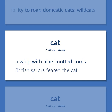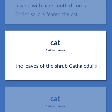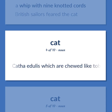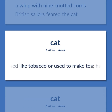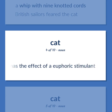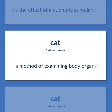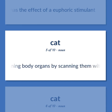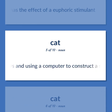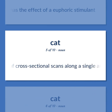British sailors feared the cat. The leaves of the shrub Catha edulis, which are chewed like tobacco or used to make tea; has the effect of a euphoric stimulant. A method of examining body organs by scanning them with x-rays and using a computer to construct a series of cross-sectional scans along a single axis.